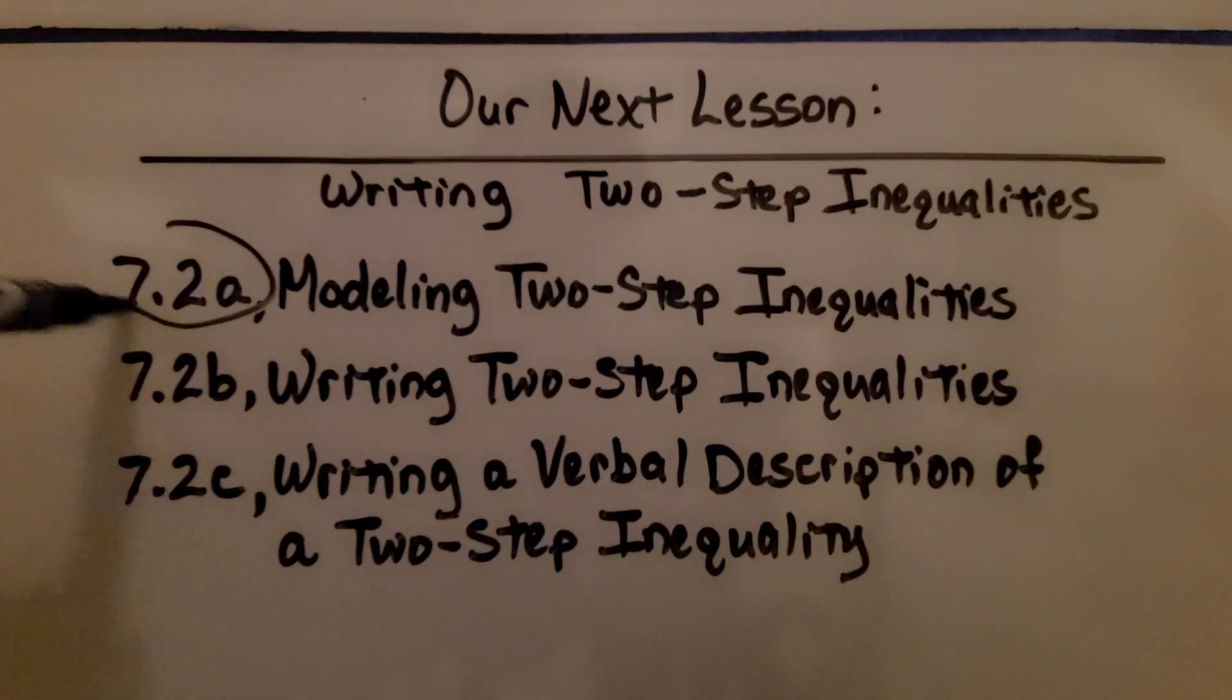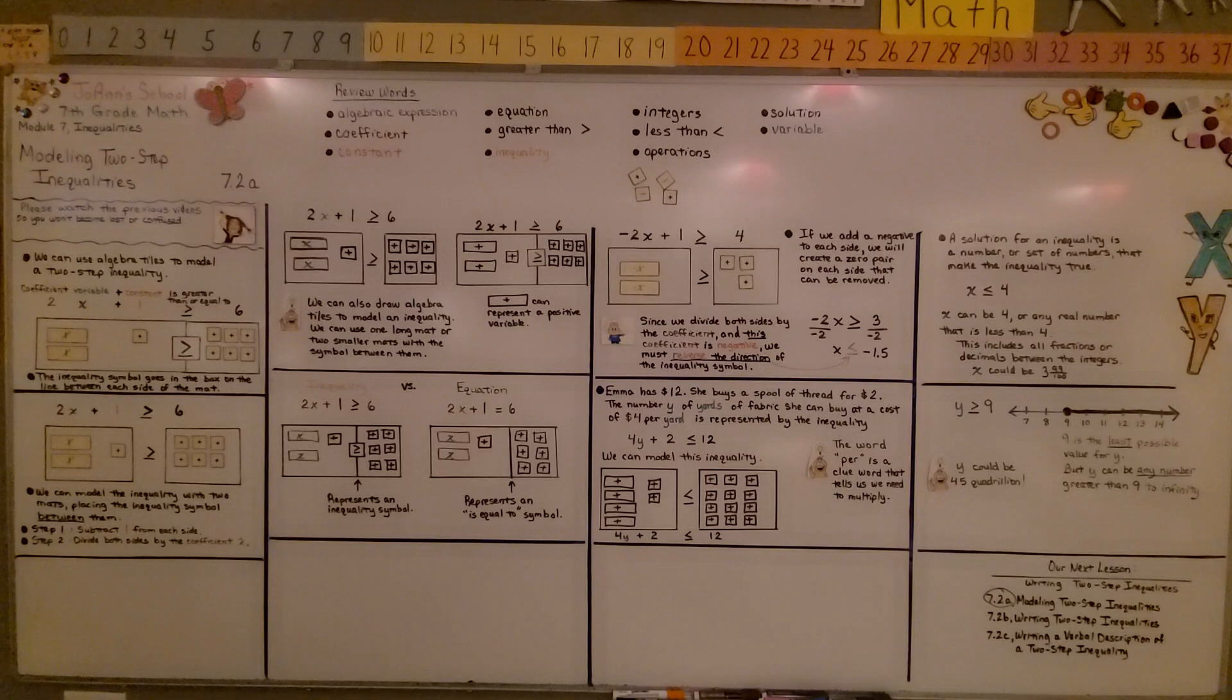We finished the first part. We're moving on to the second part of the lesson, writing two-step inequalities. So just remember, an inequality is just a mathematical sentence that shows the relationship between quantities that are not equivalent. Have a wonderful day and join me for the next part of the lesson. Bye.